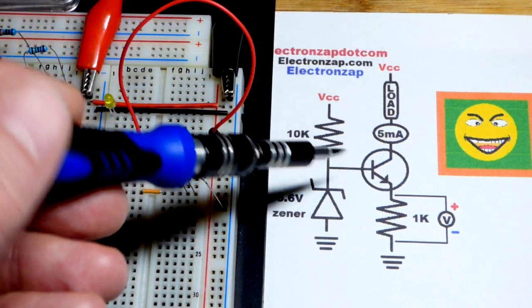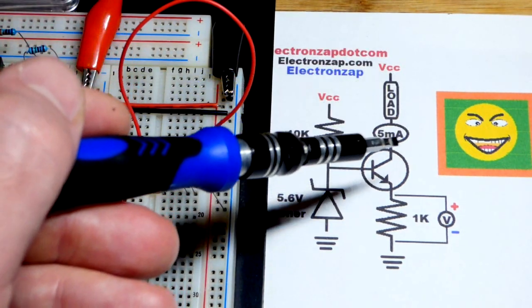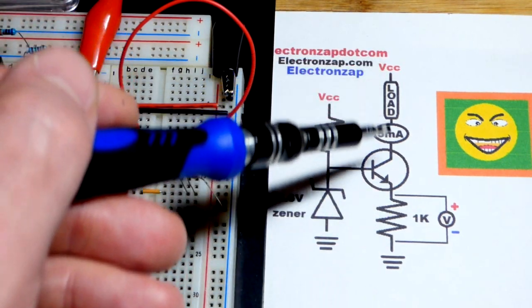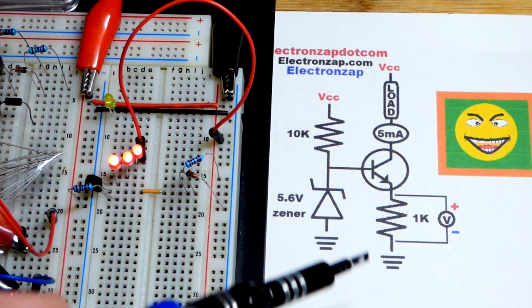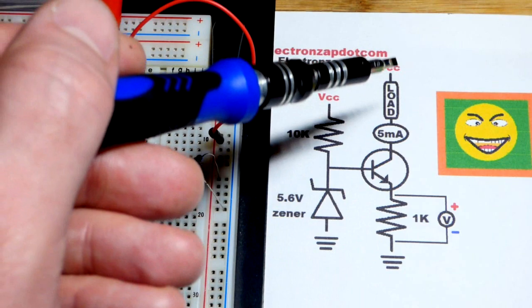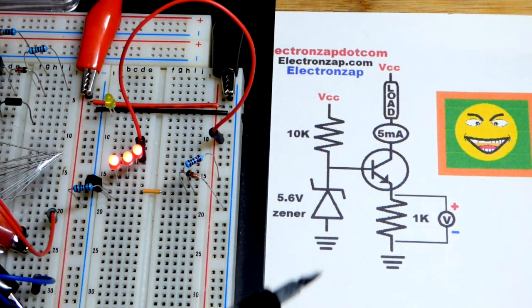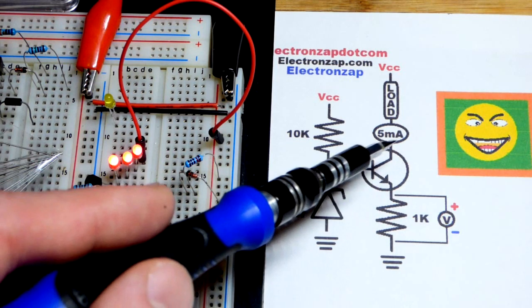Now, that just sets the voltage over there. The rest of this is in series, so collector to emitter and then the resistor. So the load and all that is in series. Whatever current's going through here will be the same amount of current going through there. That just sets the voltage. This sets the current.